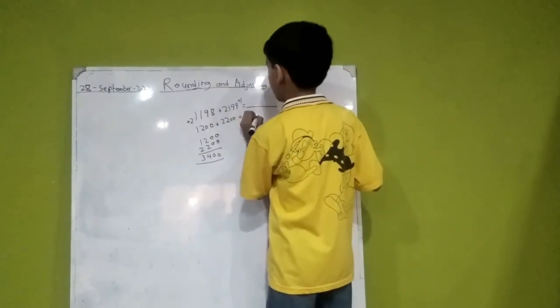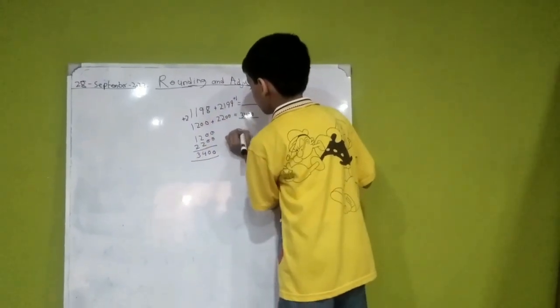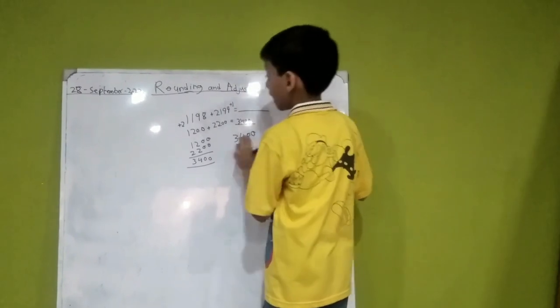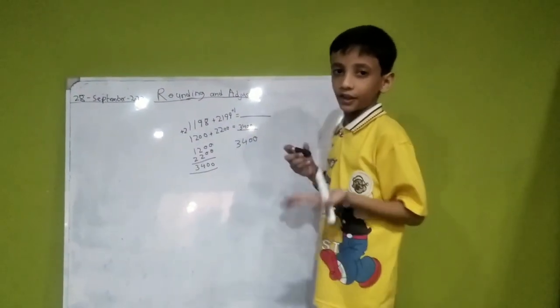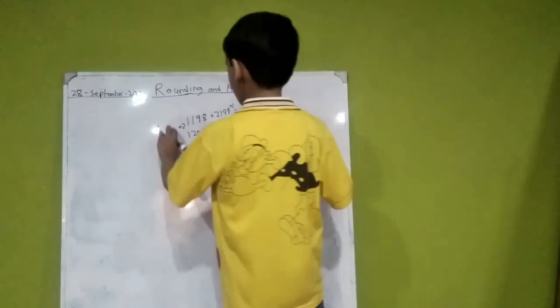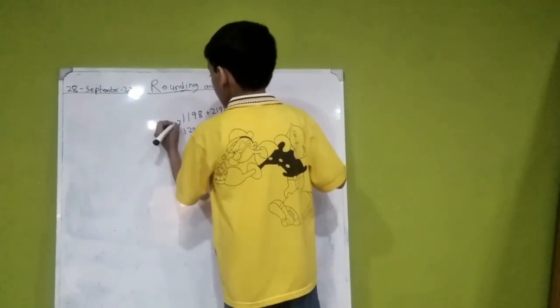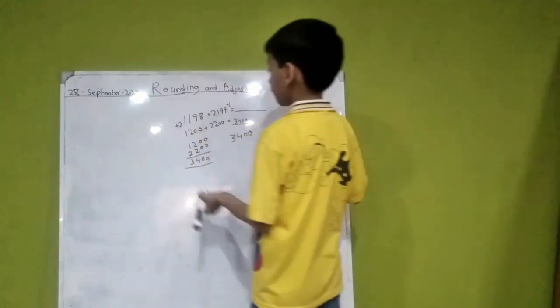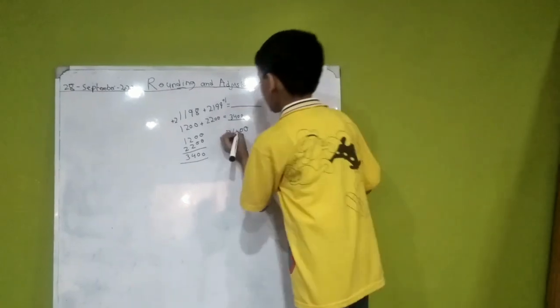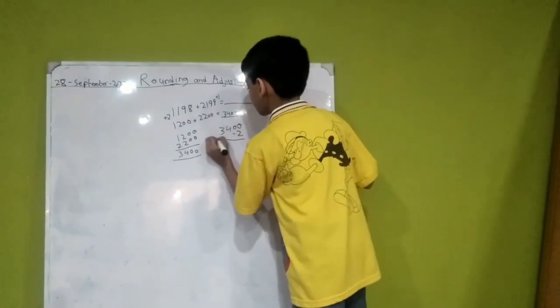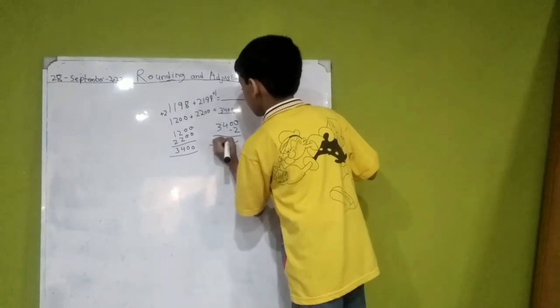But that is not my actual answer. Now in the answer, we will minus two. This is a rule of rounding and adjusting strategy: when you plus a number here, it will become minus, and when you minus here, it will become plus. So it will be two minus two. My answer will be 19.